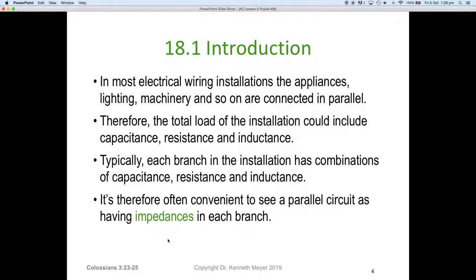Therefore the total load of the installation could include capacitors, resistors and inductors connected together in different combinations, but still in parallel. Typically each branch in the installation has combinations of capacitance, resistance and inductances. It's therefore often convenient to see parallel circuits as having an impedance in each branch. So if we can deal with the impedance in each branch, then we can define the branch currents or the branch impedances, and then work out the currents.